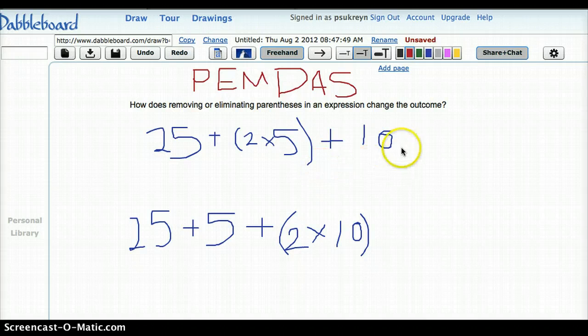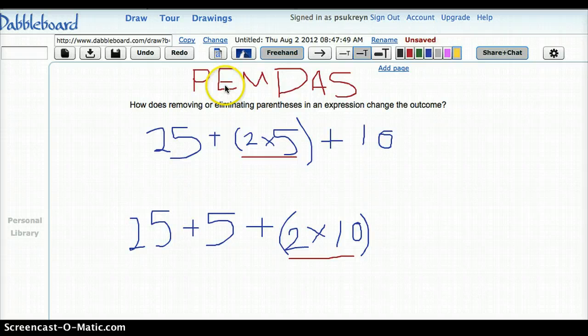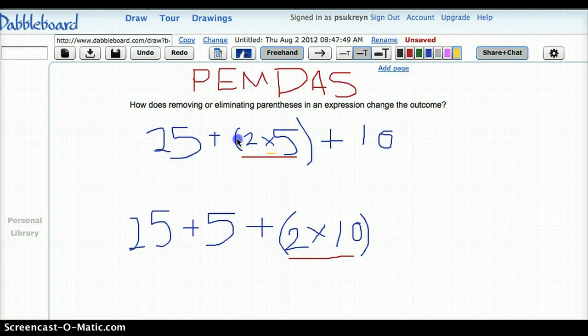So what we're going to do now is see how the answers of these two compare even though the numbers are similar but we have the parentheses in a different place. So first we know we're going to do P or parentheses and I don't have any exponents. So the next thing is multiply and divide. We will multiply in here, we will multiply in here.